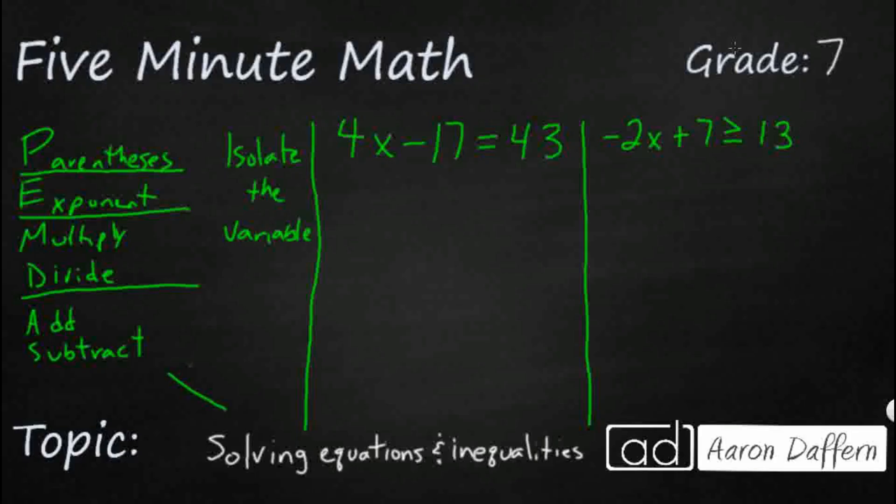We actually start here, and we look to see, in this case, let's start with our 4x minus 17 equals 43. So we have that equation there. So I have this 4x on this side, so I'm wanting to get that all by itself. The x on one side of the equal sign, everything else on the other side.